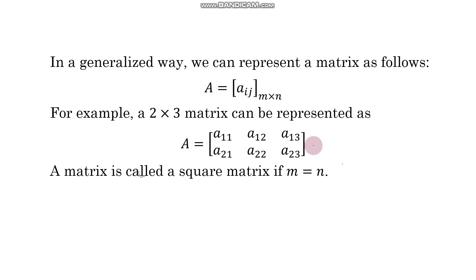You have already gone through matrices, their types and properties in previous classes. Here we will analyze and define each term in a generalized way so that you can understand the basics and utilize it for computation purposes. In a generalized way, we can represent a matrix as A = [a_ij] of order m by n, where we use capital letters to denote a matrix, m by n is the order, and a_ij is the (i,j)th element.